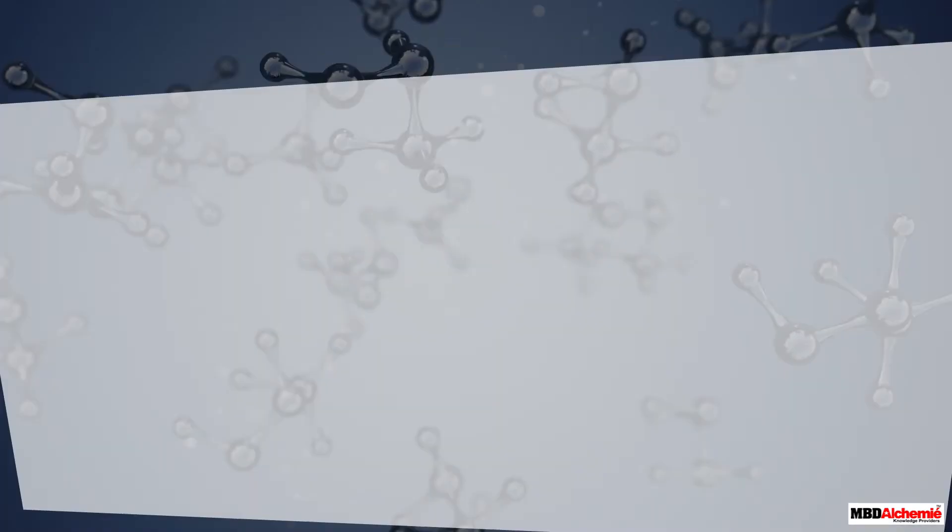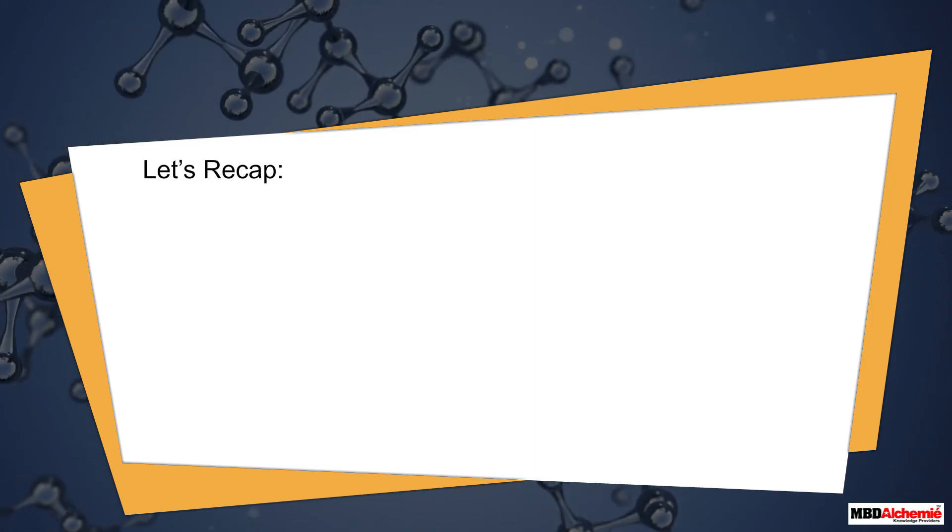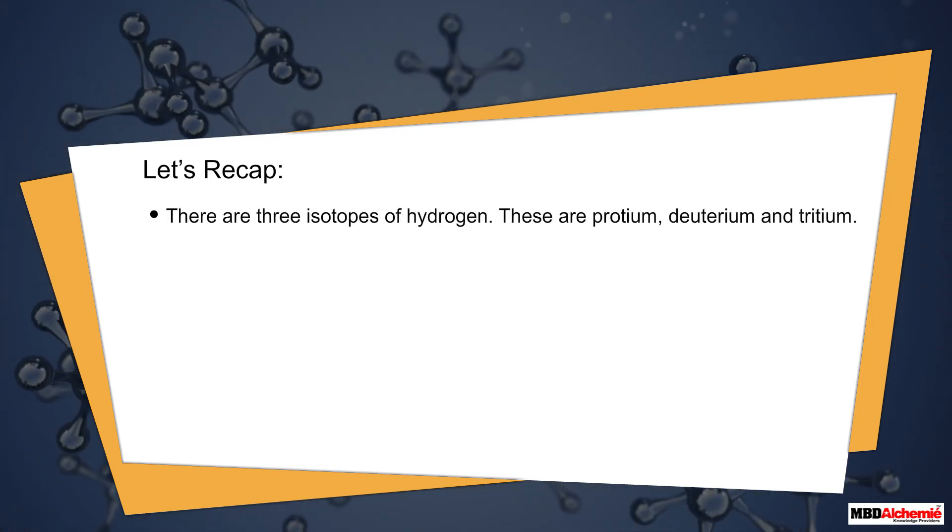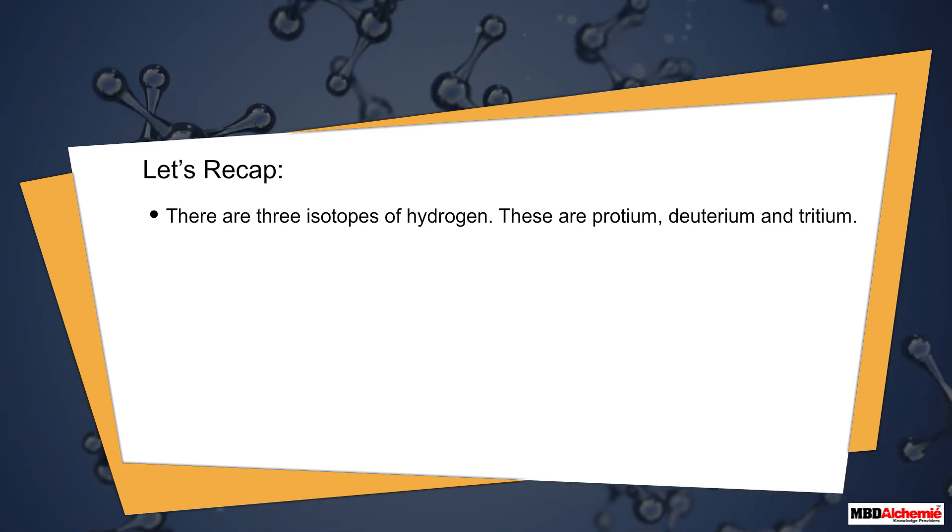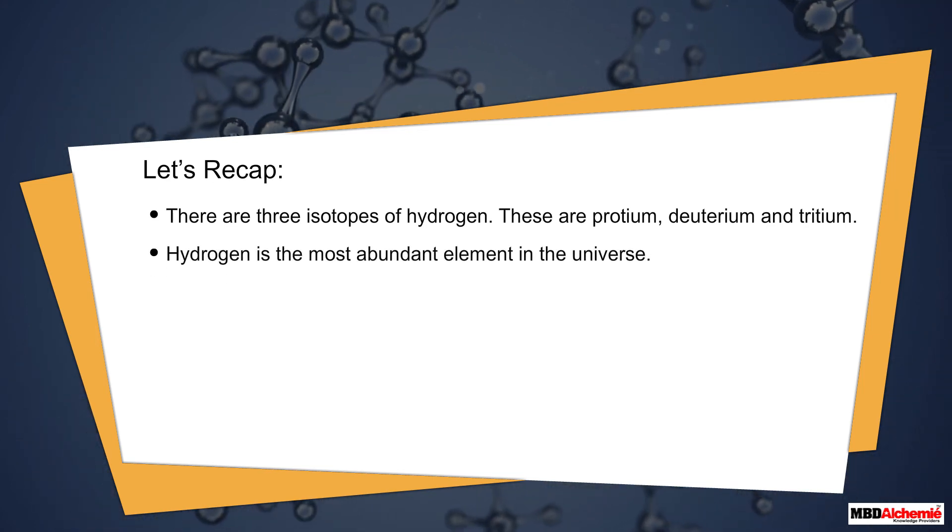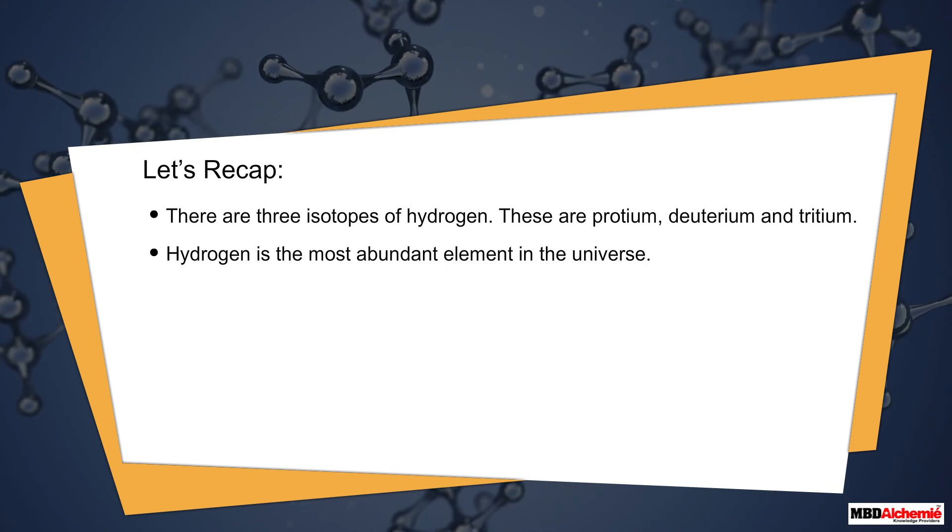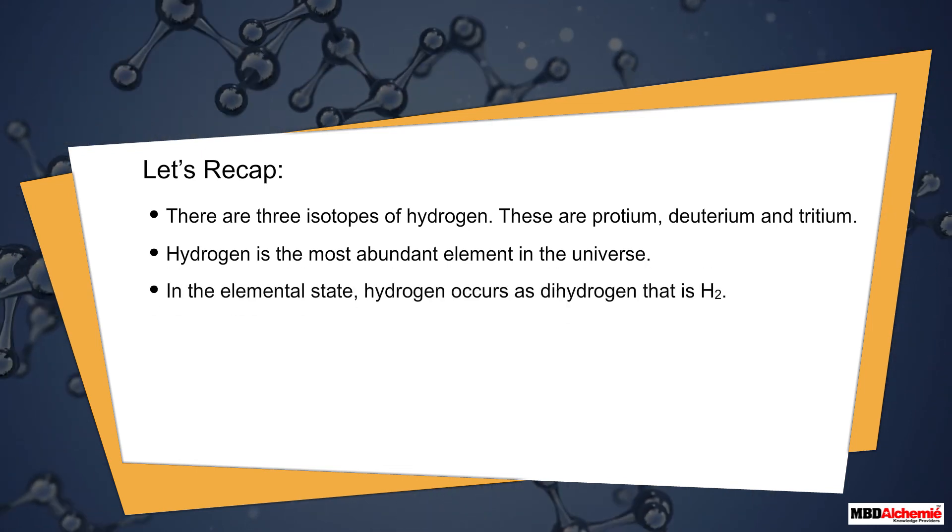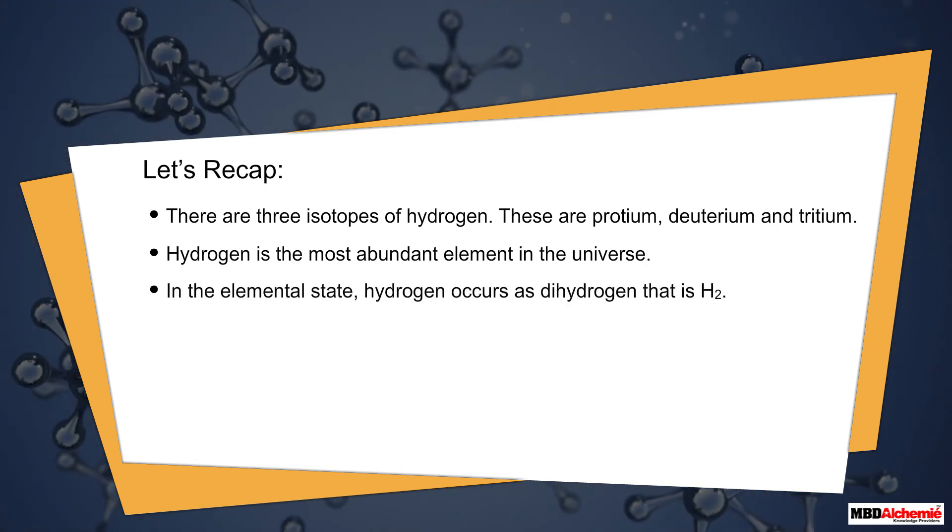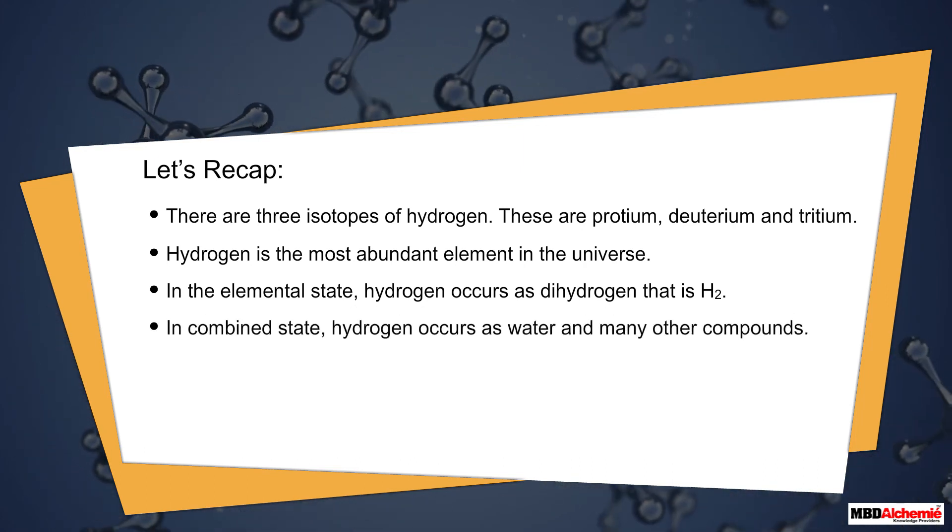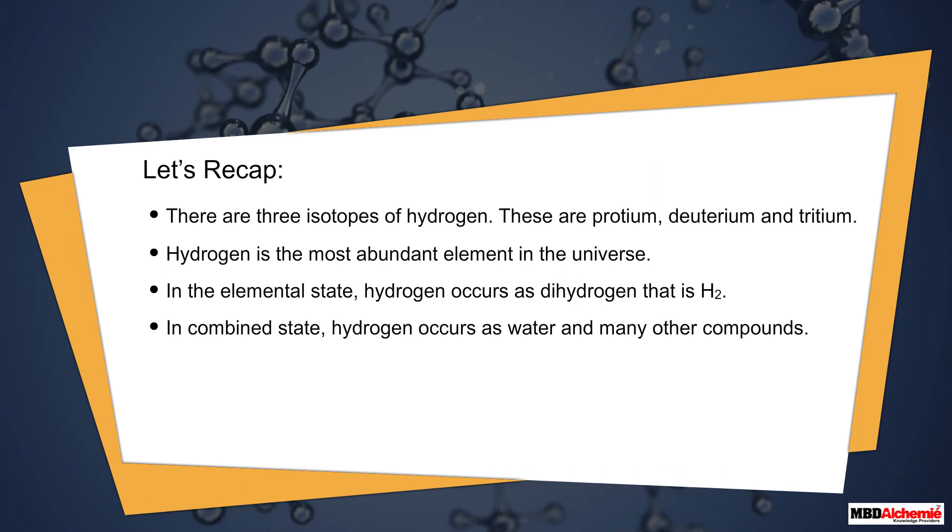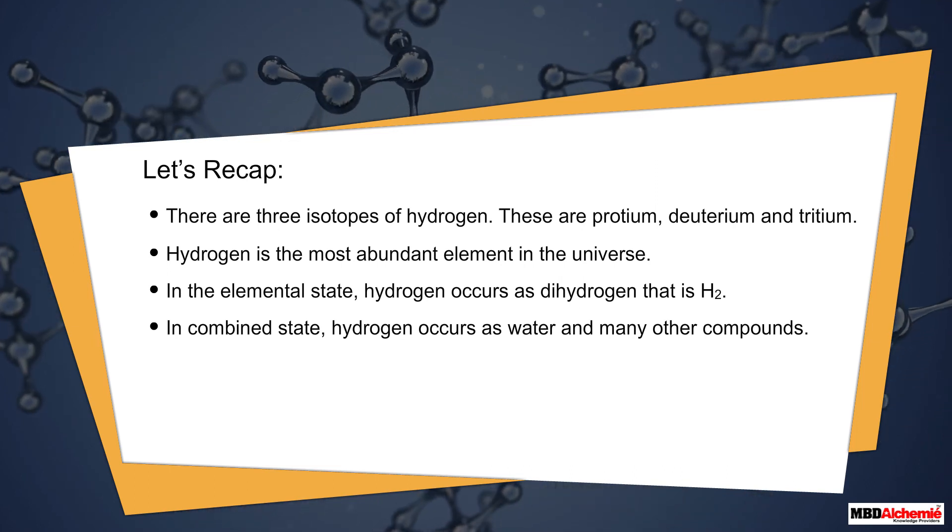Let's recap. There are three isotopes of hydrogen: protium, deuterium, and tritium. Hydrogen is the most abundant element in the universe. In the elemental state, hydrogen occurs as dihydrogen, that is H2. In the combined state, hydrogen occurs as water and many other compounds.